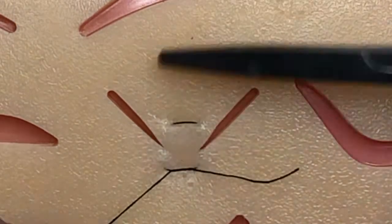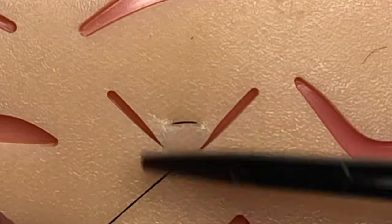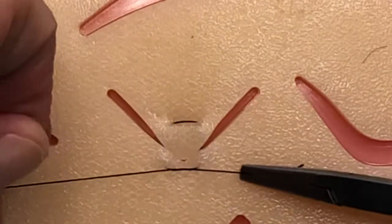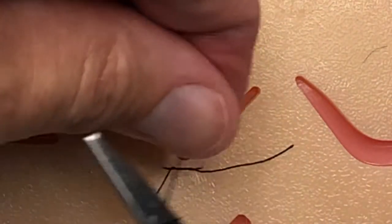You can see here how that tension is distributed across two different sutures that are going through the tissue out and across and back through. So this really just helps distribute the tension across the wound. Less likely for strangulation.